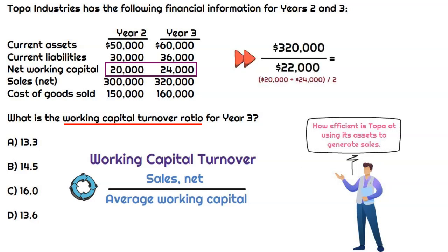When we take three hundred and twenty thousand dollars worth of sales in the numerator and average working capital of twenty-two thousand in the denominator, that results in a working capital turnover ratio of fourteen point five. So that's the correct answer here.